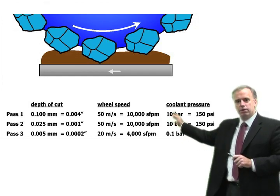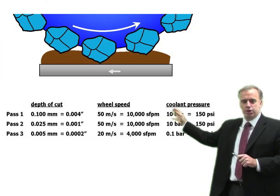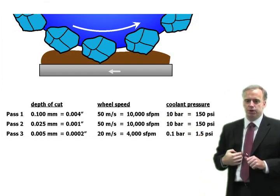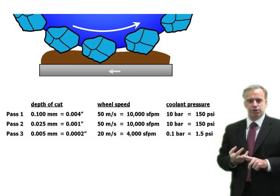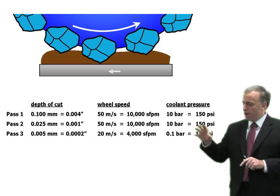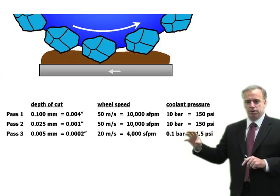Number one, drop your wheel speed. You drop your wheel speed, you increase your chip thickness, you increase your penetration depth, you increase your aggressiveness. Now those grits are going to bite into the workpiece.